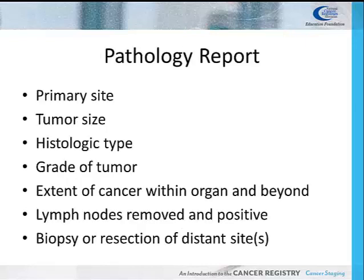The pathology report is the most important resource needed for staging. The pathology report states where the primary tumor is, its size, histological type, grade of tumor, or how closely the cells resemble the normal tissue in which the tumor originated, extent of the cancer microscopically, how many lymph nodes have been removed and examined, and how many lymph nodes are positive for cancer. The pathology report also includes information on any biopsies or resections of distant sites done at the time of surgery or diagnostic workup. Even though pathology reports are the most important and definitive information of a cancer, sometimes we must also rely on imaging studies and the surgeon's operative report in order to stage a cancer.